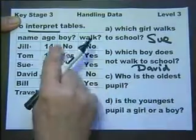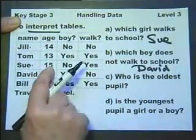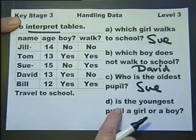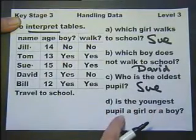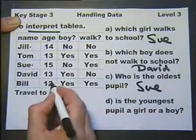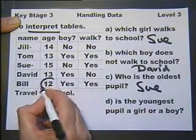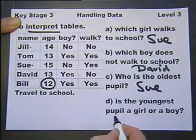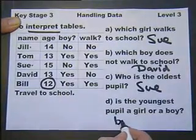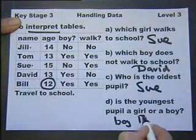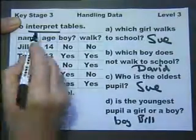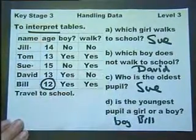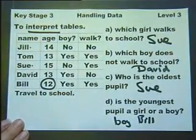'Who's the oldest pupil?' Looking at the ages, 15 is the oldest — that's Sue. 'The youngest pupil — is it a boy or a girl?' The youngest is 12 — yes, it's a boy, and it's Bill. So that's interpreting tables: some information on a table, and you have to interpret the information.